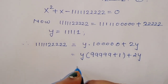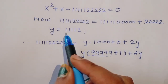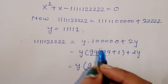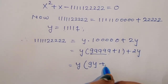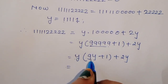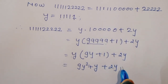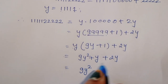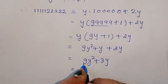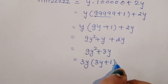Now y equals 11111, which is 5 times 9 plus 1 plus 2y. We already considered that 5 times 1 is y, so we can write 9y plus 1 plus 2y. Solving this gives 9y squared plus y plus 2y, which we can write as 9y squared plus 3y plus 3y. Taking 3y common: 3y times 3y plus 1. This is equation 2.